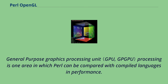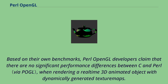General purpose graphics processing unit processing is one area in which Perl can be compared with compiled languages in performance. Based on their own benchmarks, Perl OpenGL developers claim that there are no significant performance differences between C and Perl, when rendering a real-time 3D animated object with dynamically generated texture maps.